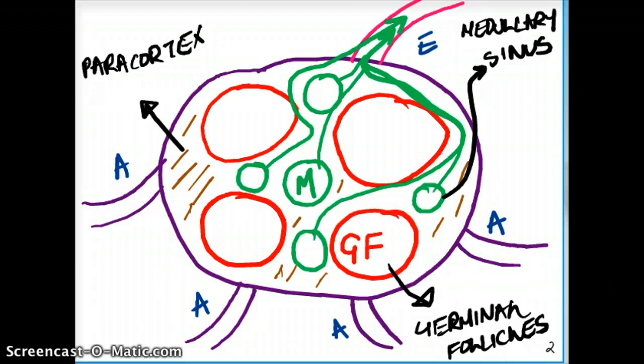It's DiGeorge. Do you remember the disease where there is the third and the fourth pharyngeal pouches fail to develop? And you have tetany. You have no T cells. And if you don't have any T cells, if you don't have the ability to make any T cells, which happens in the paracortex, the paracortex is actually going to shrink. So that is our paracortex.